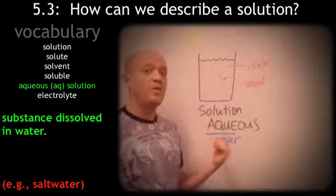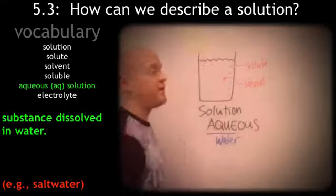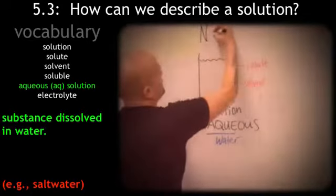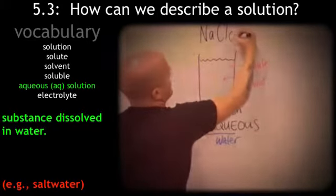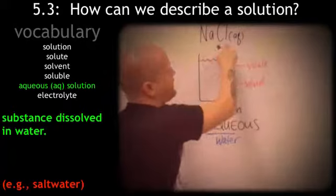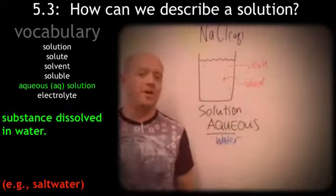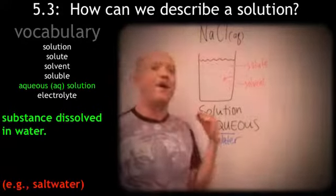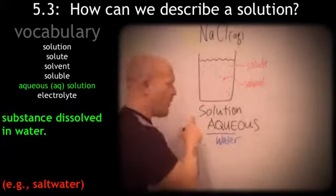So an aqueous solution of sodium chloride would be written like this. In other words, that is salt dissolved in water, forming a homogeneous mixture or a solution.